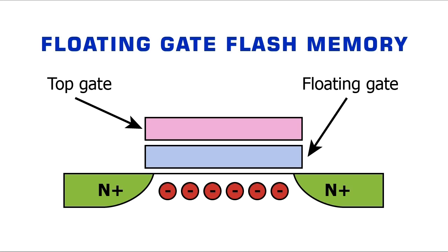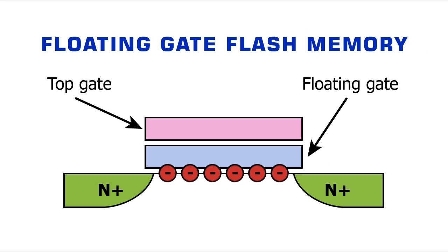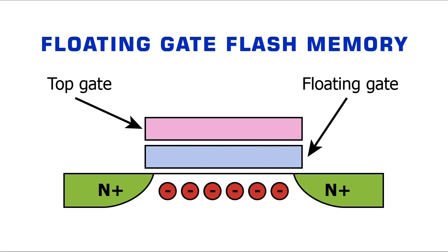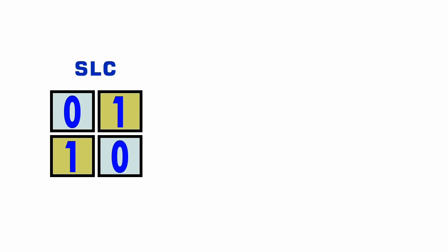SSDs store bits of data by trapping or releasing electrons in the floating-gate transistors that comprise their flash memory cells. The first SSDs used single-level cell or SLC technology, which stored 1 bit of data per cell. However, virtually all modern SSDs use multi-level cell or MLC technology, which allows more than 1 bit of data to be retained in each cell.